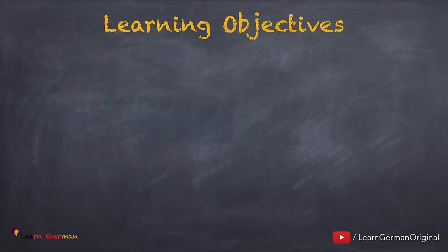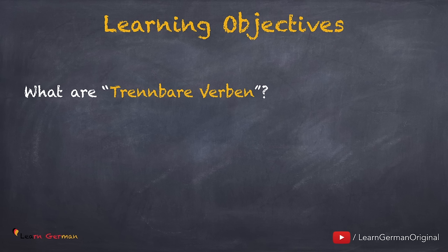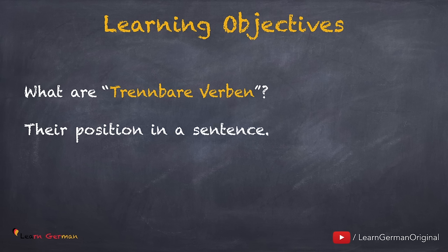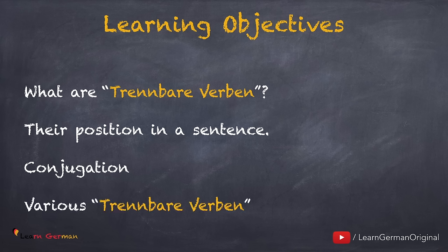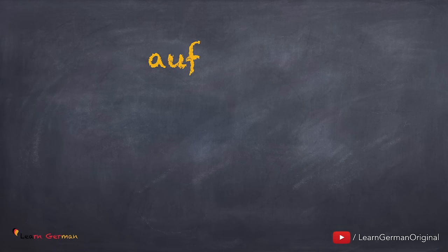Let's first go through our learning objectives. We'll be learning what trennbare Verben are, followed by their position in a sentence. Then we'll be doing the conjugation and we'll be learning the most important trennbare Verben. So let's look at two verbs.